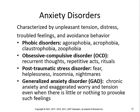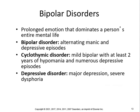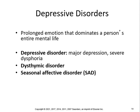Prolonged emotions that dominate a person's entire mental life include bipolar disorder, alternating between manic and depressive states. Cyclothymic disorder is a mild bipolar with at least two years of hypomania and numerous depressive episodes. Depressive disorders include major depression with severe dysphoria, dysthymic disorder, and seasonal affective disorder. Make sure you know what categories belong to bipolar versus depressive versus dissociative disorders.